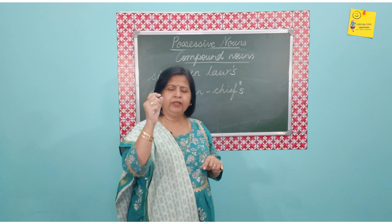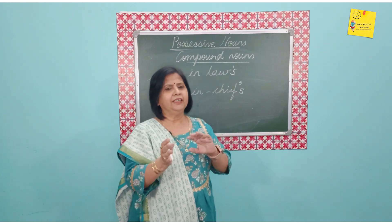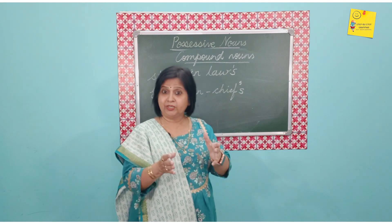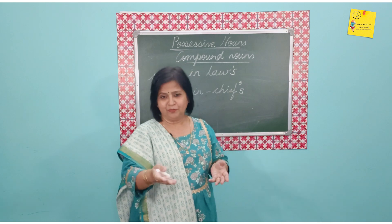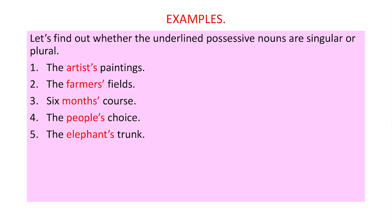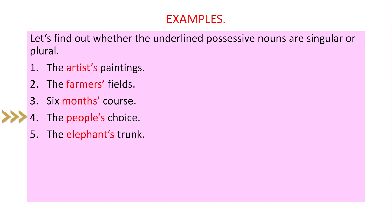Let us have a quick activity — just identify whether the possessives given are in singular or plural form. The artist's painting: artist apostrophe S — that is one singular person, so this is singular. Farmers' — the apostrophe comes after the S, so it is plural. Six months' — months is plural, apostrophe only, so plural. The people's choice — people is plural. The elephant's trunk — elephant apostrophe S, so that is singular.